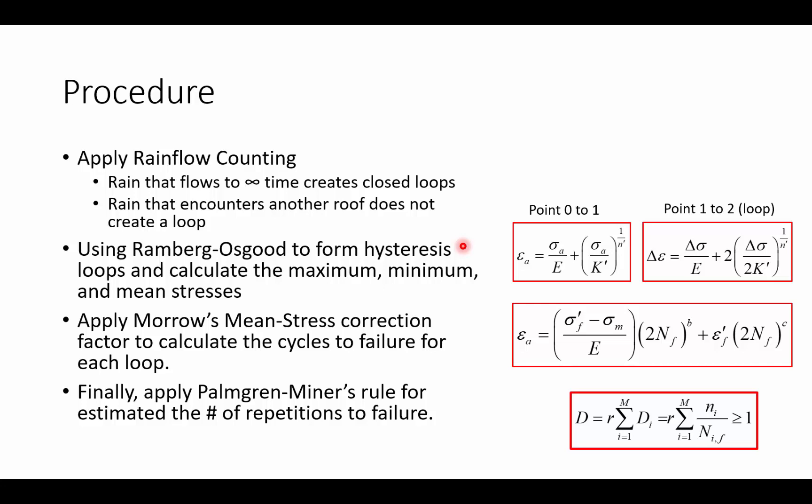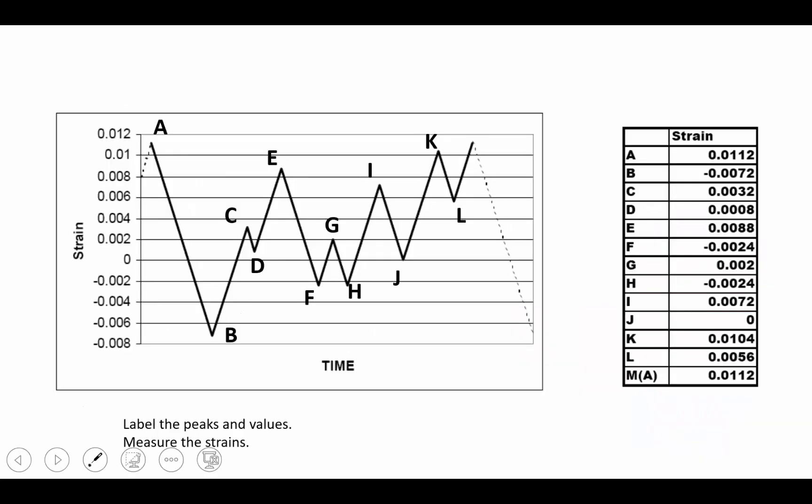Once we've created these hysteresis loops, then we'll apply Morrow's mean stress correction factor to calculate the cycles to failure for each of those loops, to consider if each of those loops was its own entity. And then finally, we would apply Palmgren-Miner's rule so that we can estimate the number of repetitions to failure for this very variable amplitude loaded data. So let's get started with the first step.